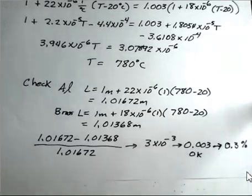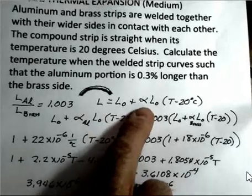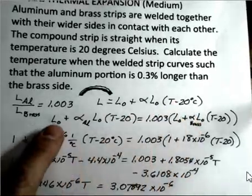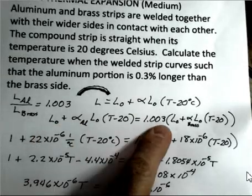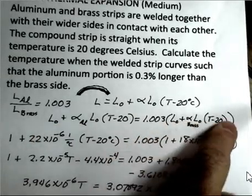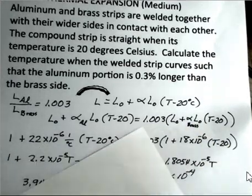And we've used the concept of linear expansion to find the new length. We set up that the length of the aluminum, the new length of the aluminum, is 1.003 multiplied by the new length of the brass. And then algebra from that point on.